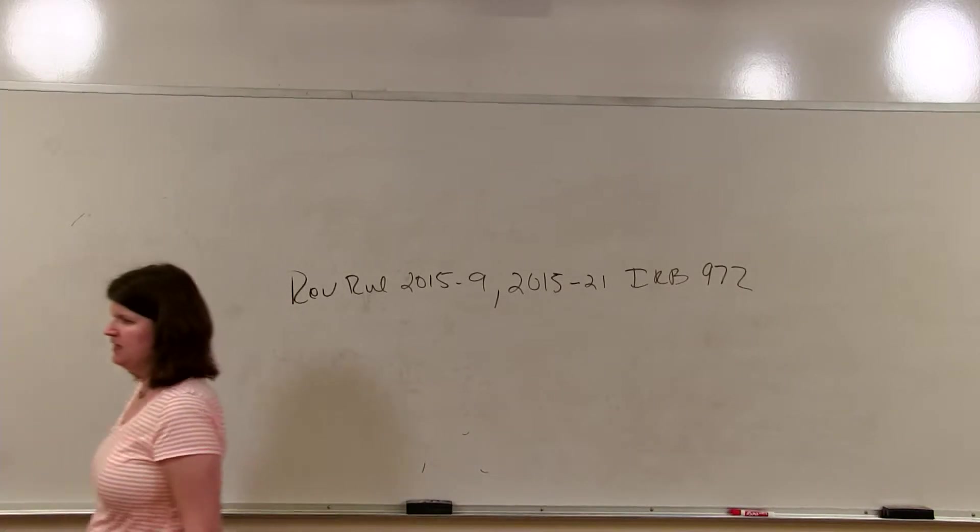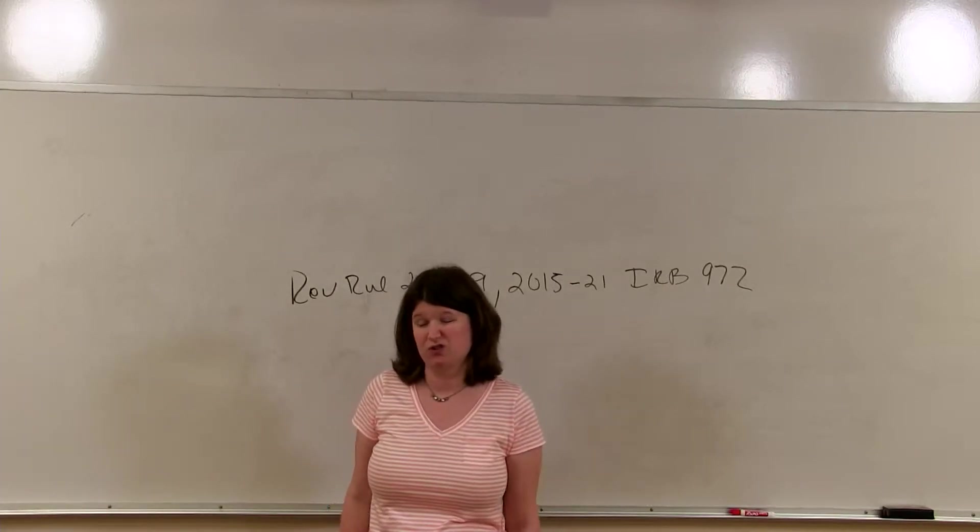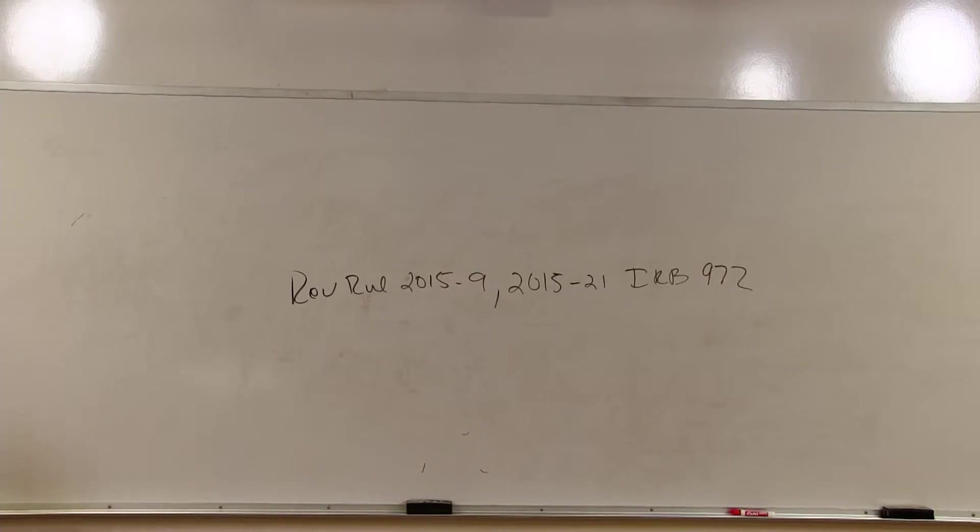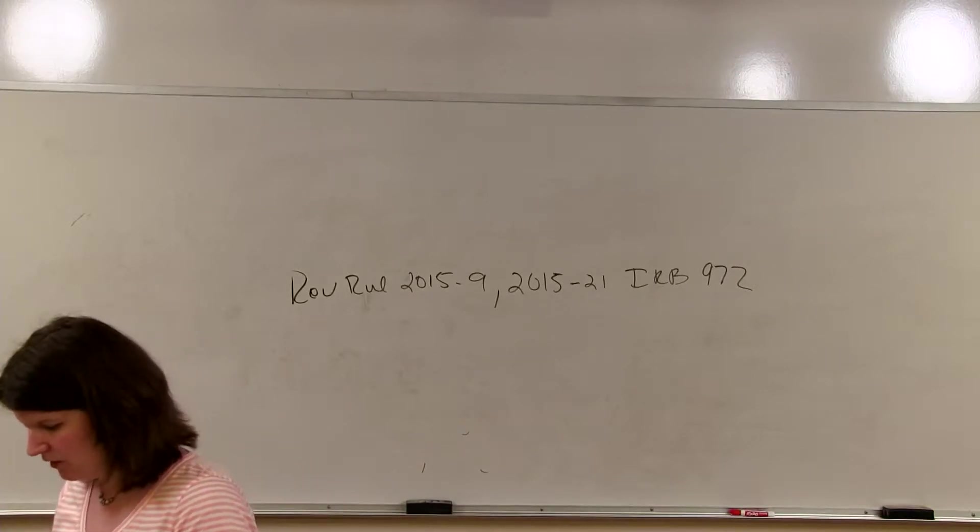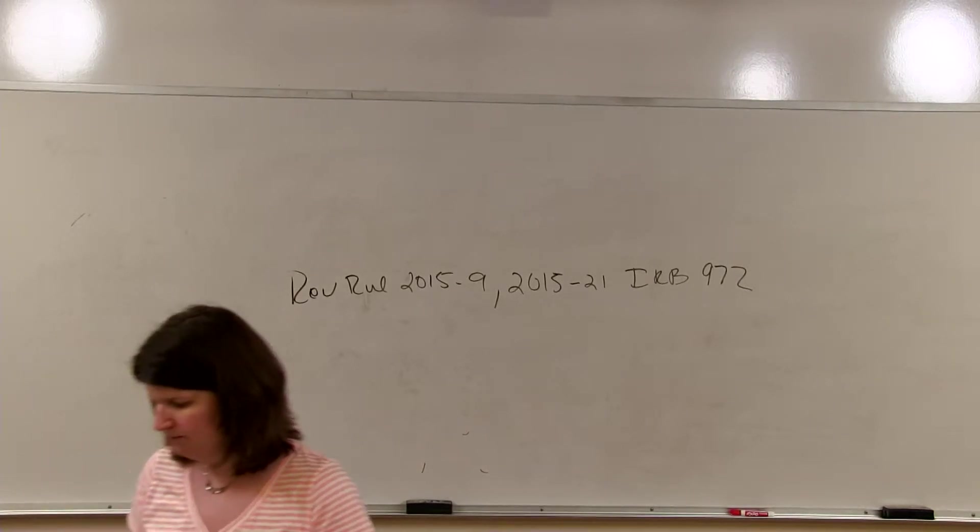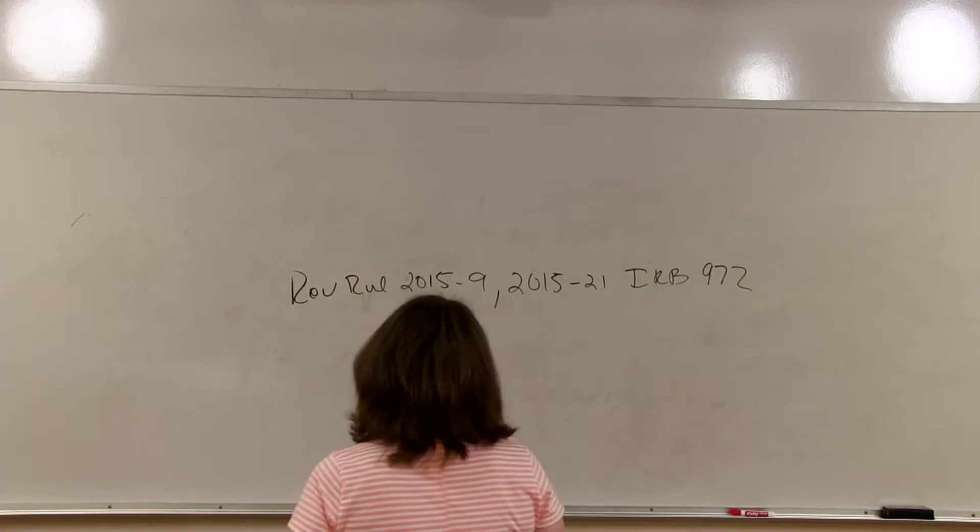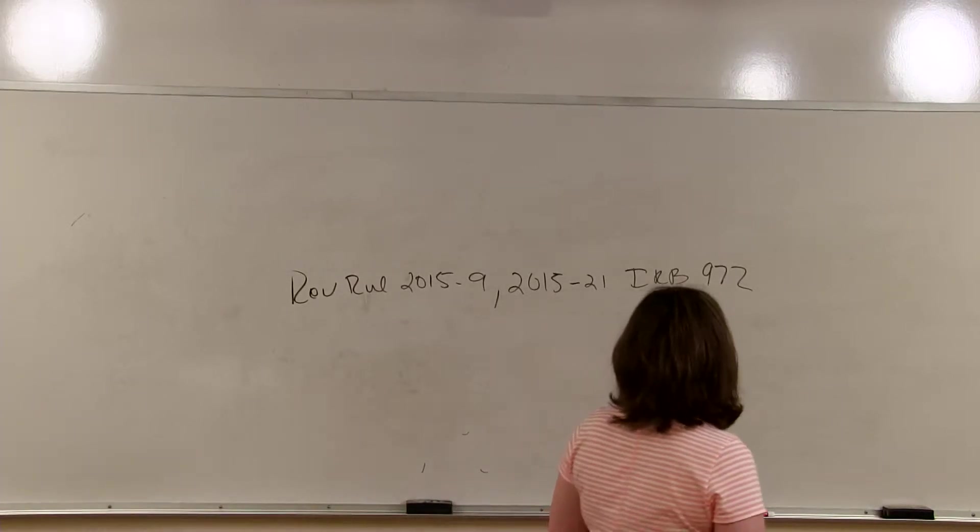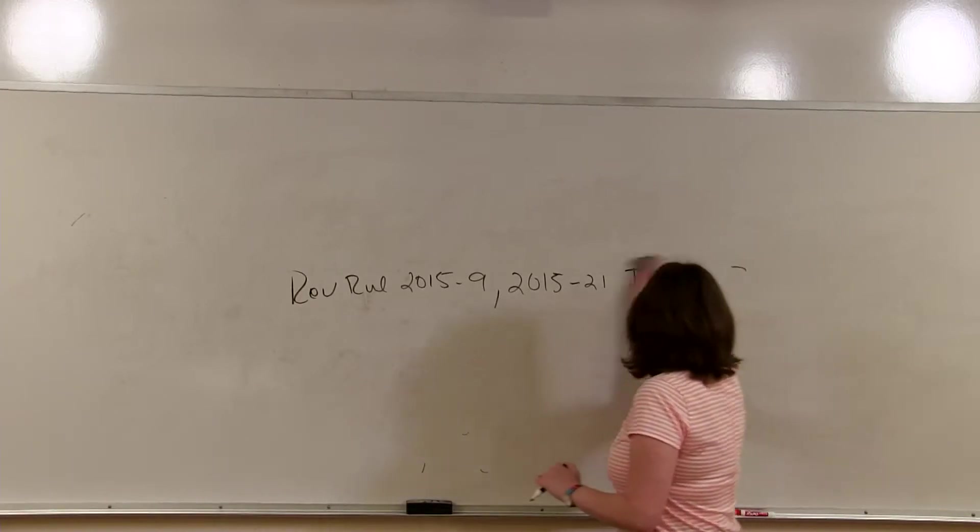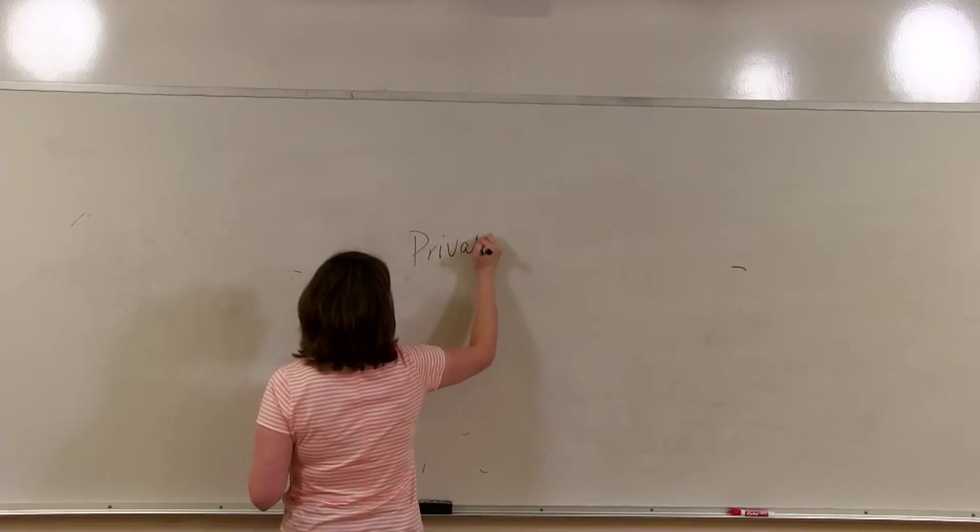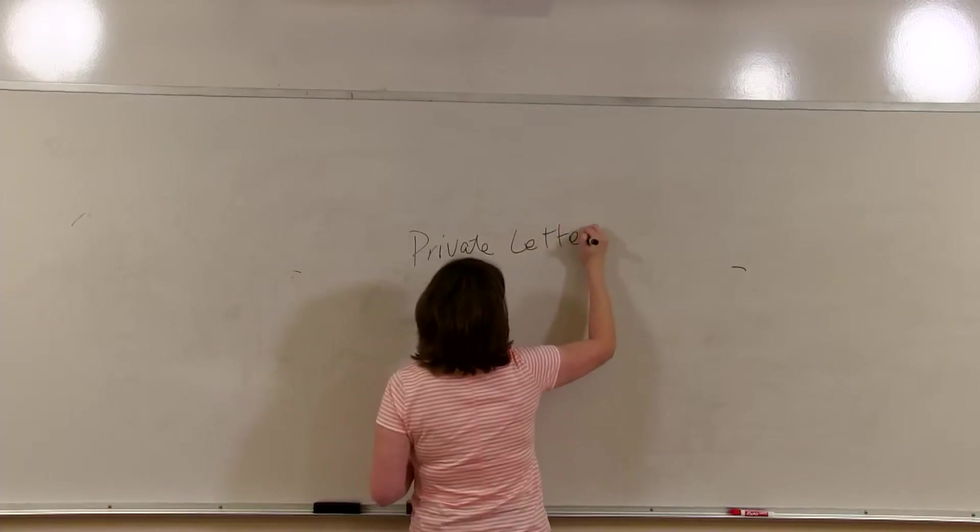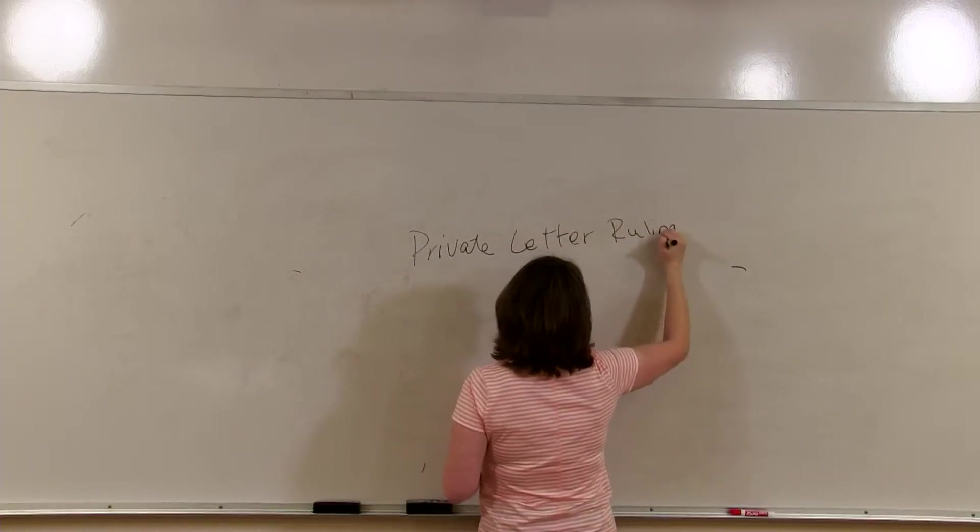As I mentioned in slide 15, revenue procedures are very similar to Rev Rules. They're just about procedure and the citations work exactly the same. They are found in the cumulative bulletins just like revenue rulings. The next category of administrative law that I want to talk about is letter rulings. So we really have two different types of letter rulings.